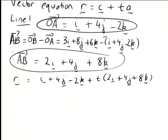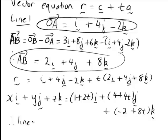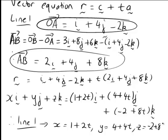Since R is just the position vector of a general point on the line, that can be rewritten as xi plus yj plus zk, and on the right-hand side grouping i, j, and k terms, we get 1 plus 2t times i, plus 4 plus 4t times j, plus negative 2 plus 8t times k. Thus for line 1, the parametric equations are: x equals 1 plus 2t, y equals 4 plus 4t, z equals negative 2 plus 8t. We'll return to these shortly.